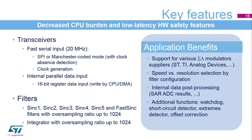Transceivers provide the serial connection to the external Sigma Delta modulator. They support serial connections with various protocols — SPI or Manchester — and configurable parameters. Their function will be explained later in detail. Transceivers also support internal 16-bit parallel data inputs, which are written to the DFSDM input data registers by the CPU or DMA.